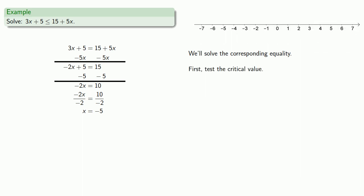The important thing to remember here is that our critical value, x equals negative 5, makes 3x plus 5 equal to 15 minus 5x. Since our inequality was less than or equal to, equality is allowed, so we should include x equal to negative 5 in our solution, and so when we graph it, there's going to be a closed circle there.